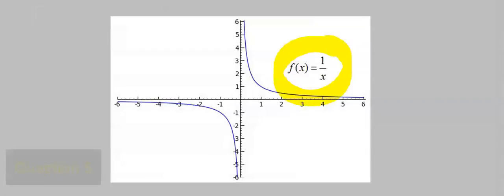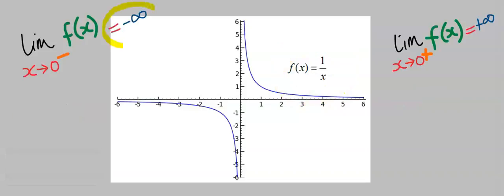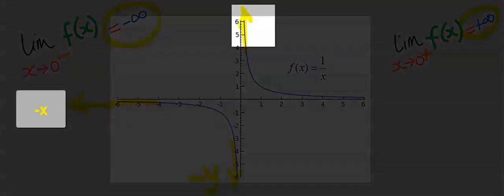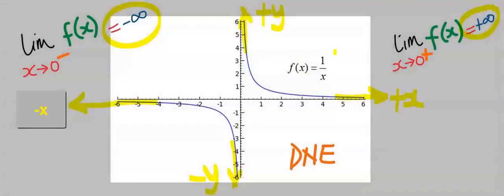Next, let's consider this function as we approach from the left and also from the right. The left-hand limit is tending towards negative infinity, going towards negative infinity on the minus y. Similarly, as the function approaches from the right-hand side, it is tending towards positive infinity on the plus y and positive infinity on the plus x. Hence, this function is undefined and we can say it does not exist.